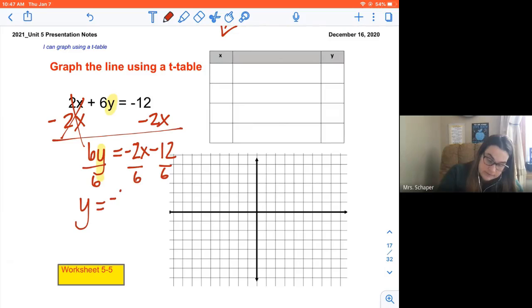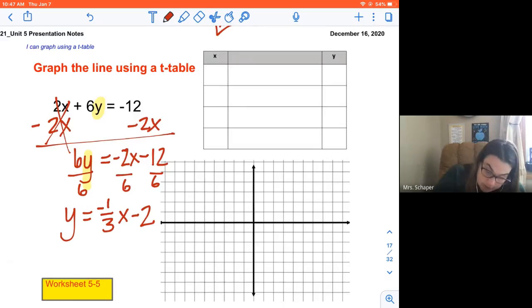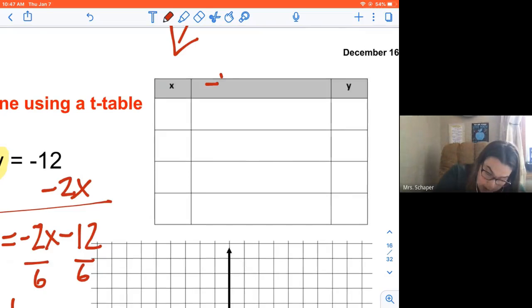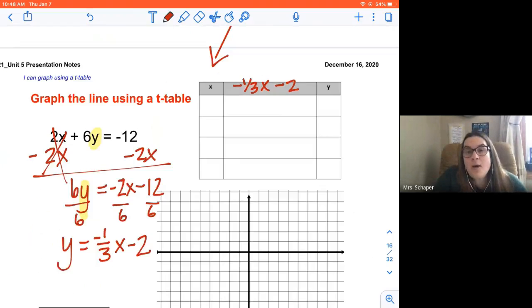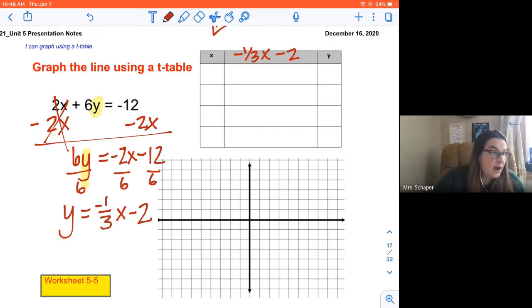Y = -1/3x - 2. Okay, so that's my equation I'm going to put into my t-table. So -1/3x - 2.